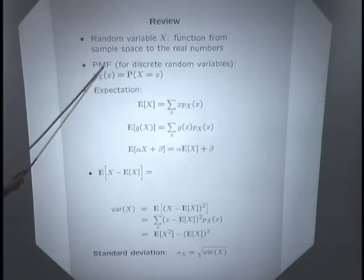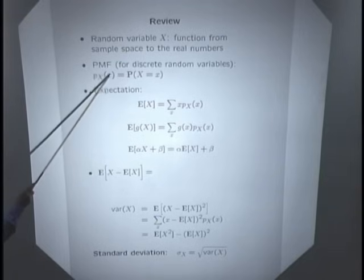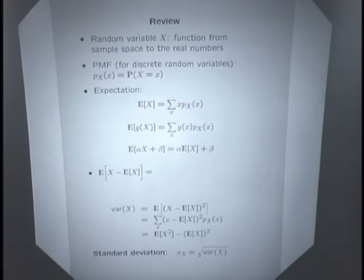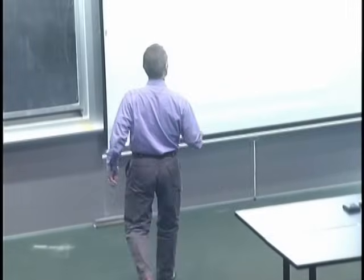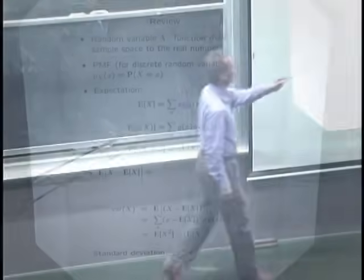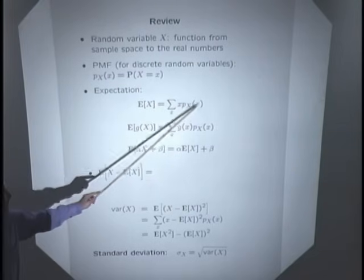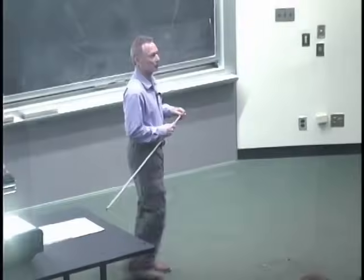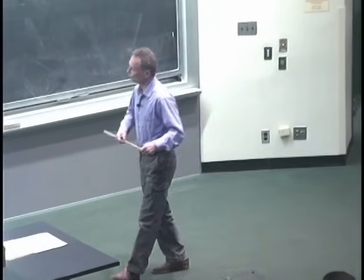This is the probability mass function of the random variable capital X — the subscript just indicates which random variable we're talking about. It assigns probabilities to all possible numerical values, so you can think of it as a function of little x that tells you how likely every little x is going to be. The expected value of a random variable is defined by looking at all possible outcomes and forming a weighted average of the numerical values, where the weight for each little x equals the probability that that particular little x is realized.